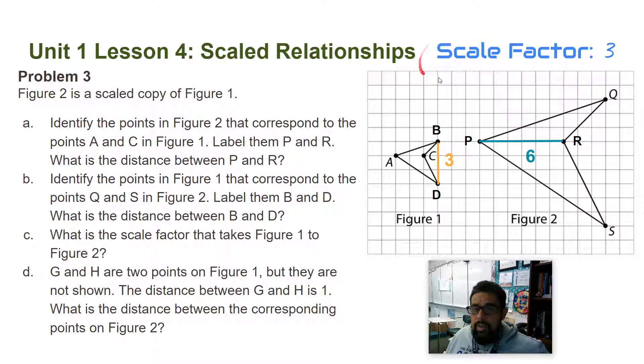I can check BD, right? BD is three. QS is nine. Three times three is nine. So the scale factor is three. All right.